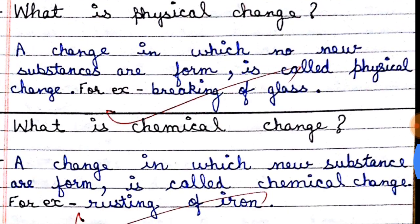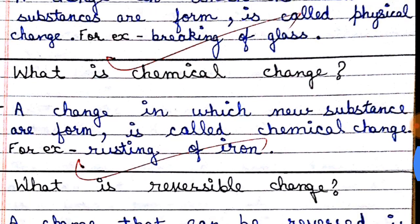Short answer type question: what is a physical change? A change in which no new substances are formed is called a physical change. For example, breaking of glass. The glass has broken, but no new substance has been formed — it is still glass, just broken into pieces. Since no new substance was formed, this is a physical change.